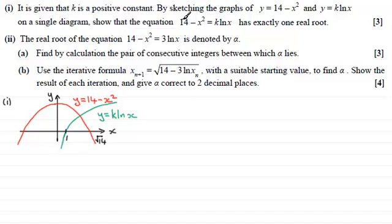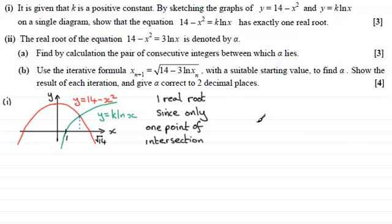Now, it says show that the equation 14 minus x squared equals k times the natural log of x has exactly one real root. Well, I can see that it's got one real root. It's got to be this point here where they cross, they just cross in one place. So that real root will be the x value here. So we can say that there is one real root since only one point of intersection.